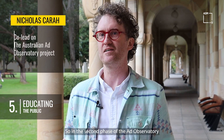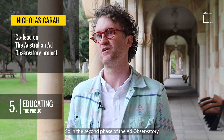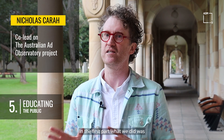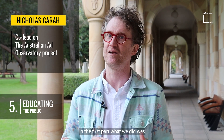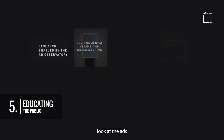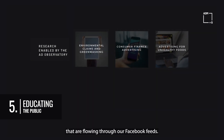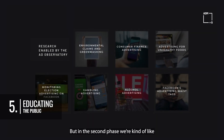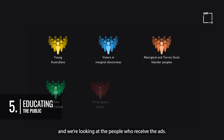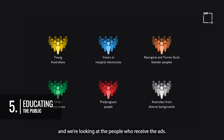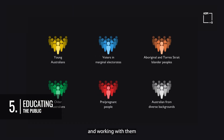In the second phase of the Ad Observatory project, we're shifting our focus. In the first part, we looked at the ads flowing through our Facebook feeds. But in the second phase, we're turning our orientation around and looking at the people who receive the ads — focusing on particular groups of Australians and working with them to figure out what their experience of automated advertising is.